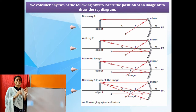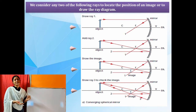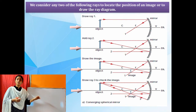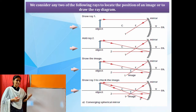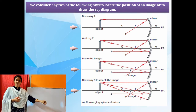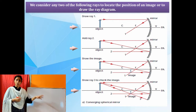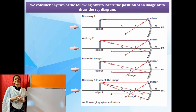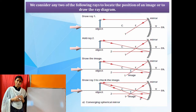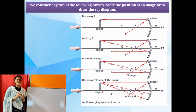To summarize the 4 rays: ray 1 — passing parallel to the principal axis, after reflection passes through focus; ray 2 — passing through focus, after reflection passes parallel to the principal axis; ray 3 — passing through center of curvature, after reflection retraces the same path; ray 4 — incident on the pole, after reflection creates the same angle but below the principal axis. You can use any two of these rays to draw the image.